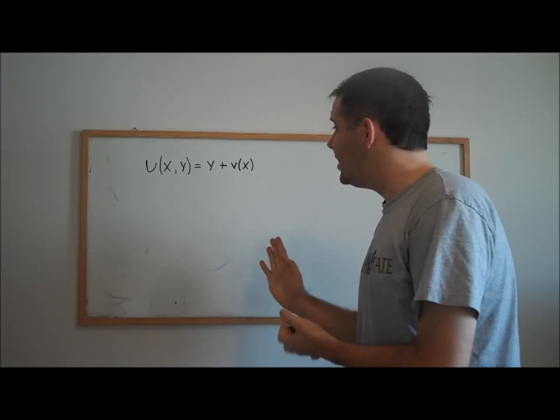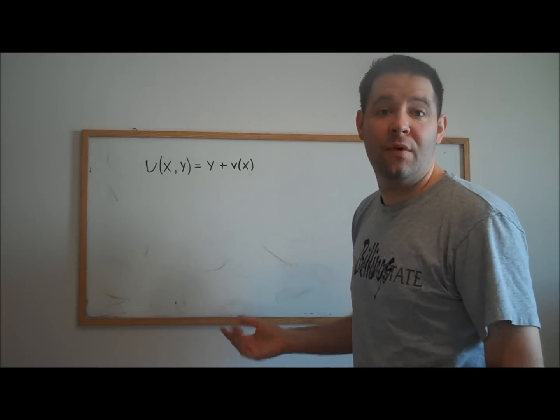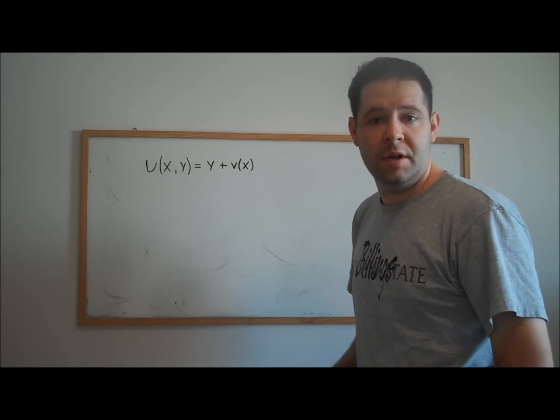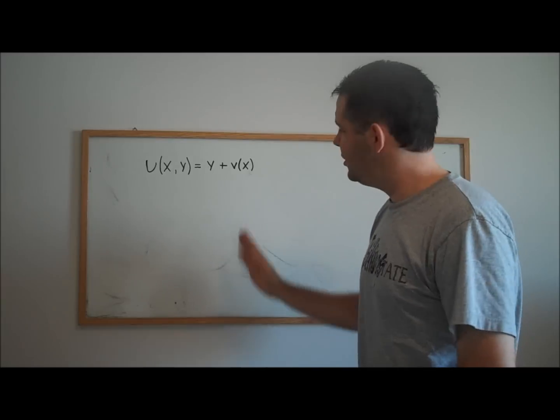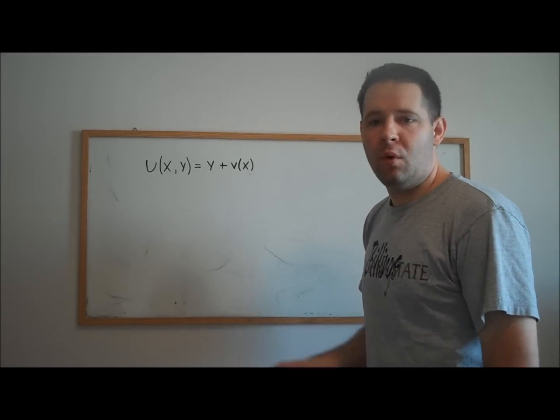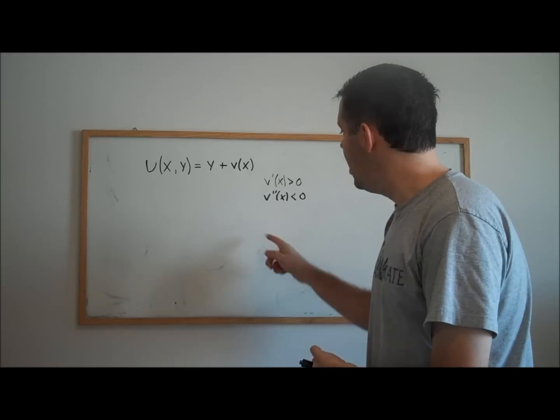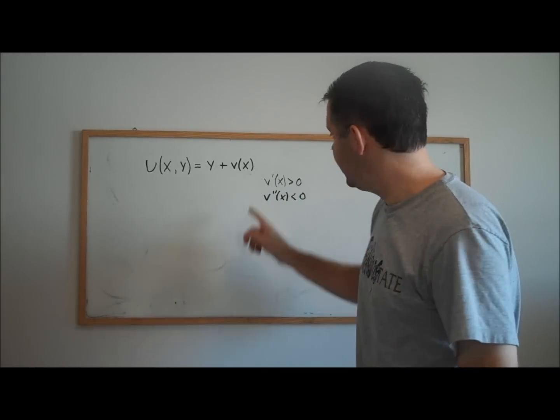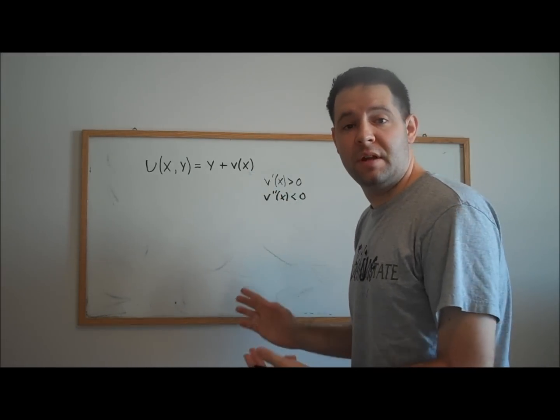A utility function is quasi-linear if it has this form. There's one argument of the utility function that just enters linearly with utility. If we increase y by one, utility increases by one. We're going to typically assume that this is a concave function of the other good.